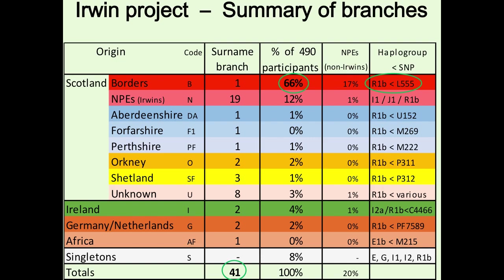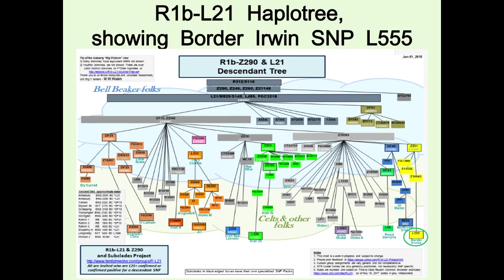The African entry is very interesting — a single 12-marker test came in from an E haplogroup, completely different from everything else. He said he was Afro-American, his great-grandfather was emancipated in 1865, and he didn't know how he got his surname. I was able to say the plantation owner was probably Scots Irish who migrated to Carolina or Florida in the 18th century — so our surname spans the whole social spectrum.